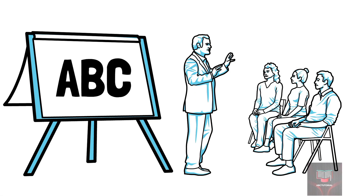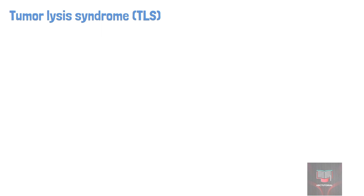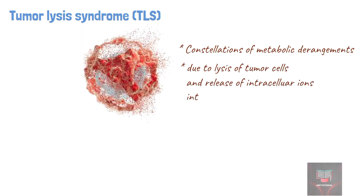Welcome to ABC Tutorial. Today we'll be talking about tumor lysis syndrome. Tumor lysis syndrome, or simply TLS, refers to the constellation of metabolic disturbances that occurs when a large number of tumor cells are killed rapidly, leading to the release of intracellular ions and metabolic byproducts into the systemic circulation.